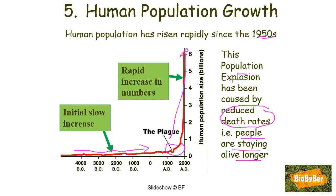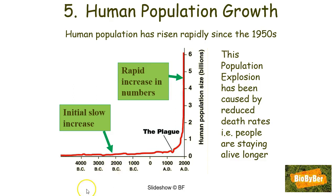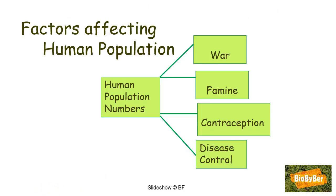Even though the population number is rising all the time, the rate at which it is rising is slowing down as the birth rate is declining in many countries. Some of the factors that affect human population numbers are war, famine, contraception, and disease control — we will talk about each one in turn.